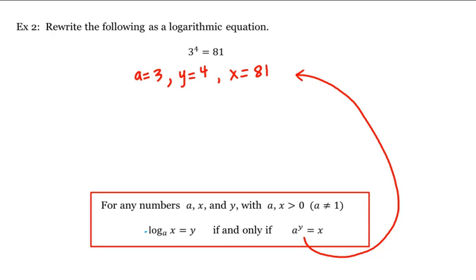Now, writing this in the equivalent logarithmic form gives us that log base a, which is 3, of x, which is 81, equals y, which is 4. And this would be our answer.